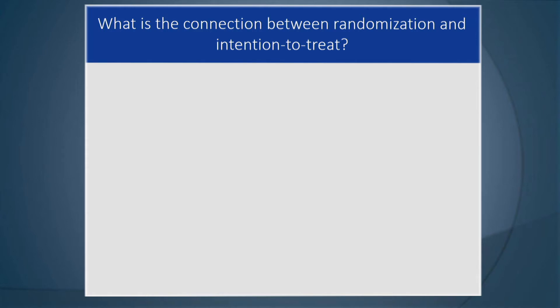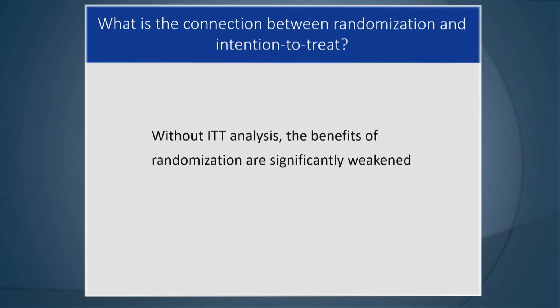What is the connection between randomization and intent to treat? Intent to treat is a principle that says every participant who is randomized should be analyzed. Without ITT — intention to treat — analysis, the benefits of randomization are significantly weakened. If you start selecting subgroups for whatever reason, you are compromising the benefits of randomization.